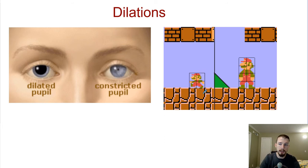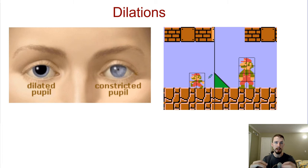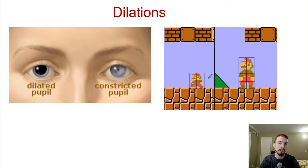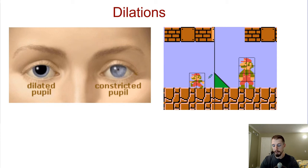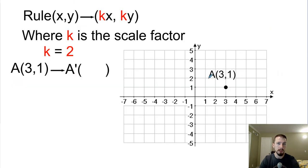We can also look at dilations with Mario. When you start out the game, you're the small Mario. Whenever you run over the mushrooms, he gets dilated by a scale factor of two — he becomes twice as big, twice as tall. Then as soon as he runs into a Goomba or stubs his toe, he shrinks back down to his original size, which would be a reduction. So this is simply dilations.